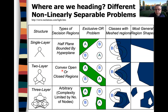If we use two layers, this is the most general shape — we can solve the XOR problem, though we still cannot solve a problem where you have meshed regions. With three layers, this is the most general region shape and we can solve complex problems. The type of decision region becomes arbitrary, and the complexity is limited only by the number of nodes.